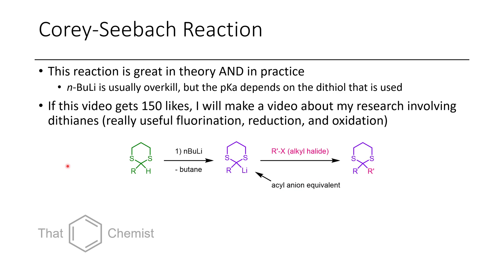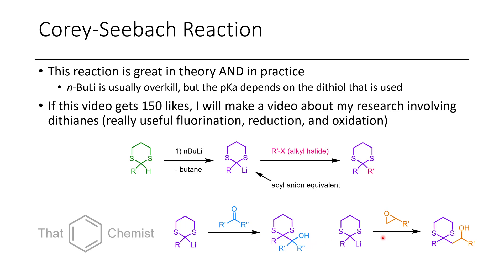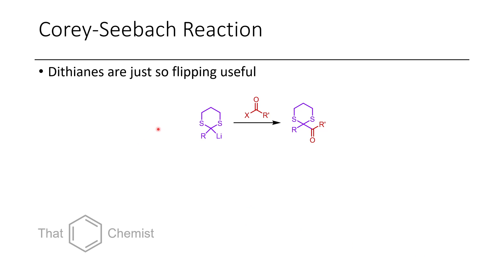Another cool reaction is trapping the lithiated dithiane with ketones — essentially a Grignard-type reaction with the dithiane retained, making it an acyl anion equivalent. You can't deprotonate an aldehyde directly since that gives a very unstable carbanion. You can also open an epoxide to get aldol-type products after unmasking the dithiane, add an acyl halide to get a 1,2-diketone after unmasking, or add an imine to get an alpha amino group. This is a super useful reaction.